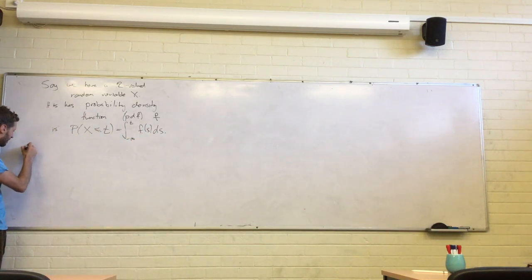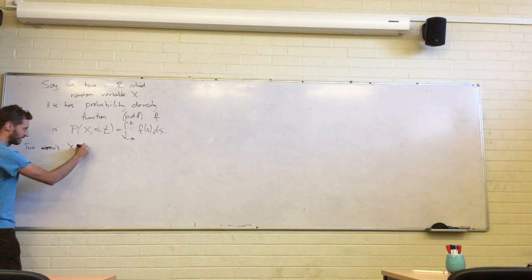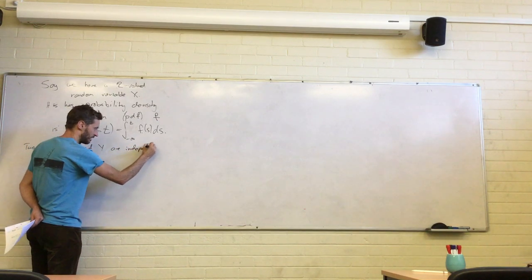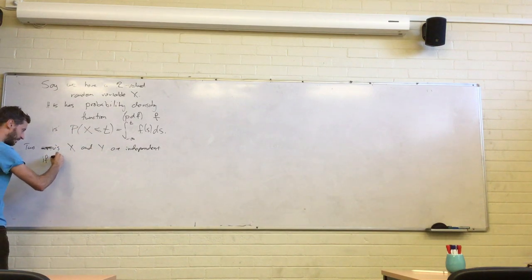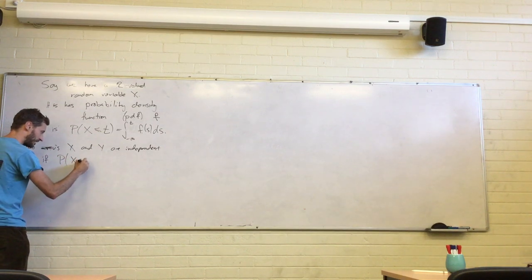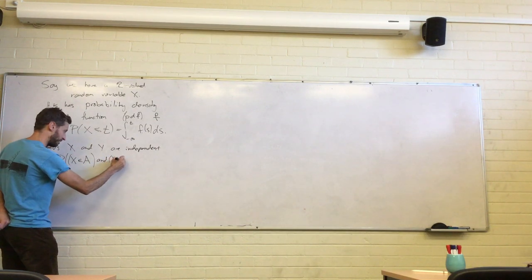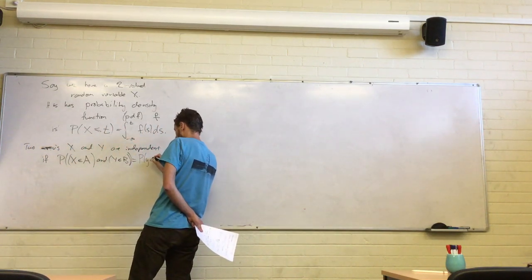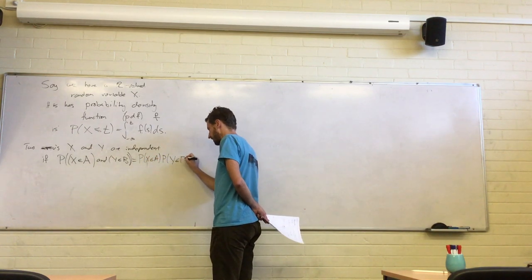And so then, two random variables x and y are independent if the probability that x is in set A and at the same time y is in subset E is just the probability that x is in A times the probability of y — which is independence.